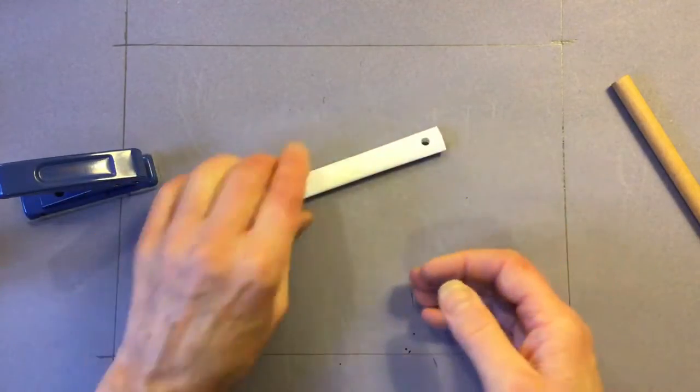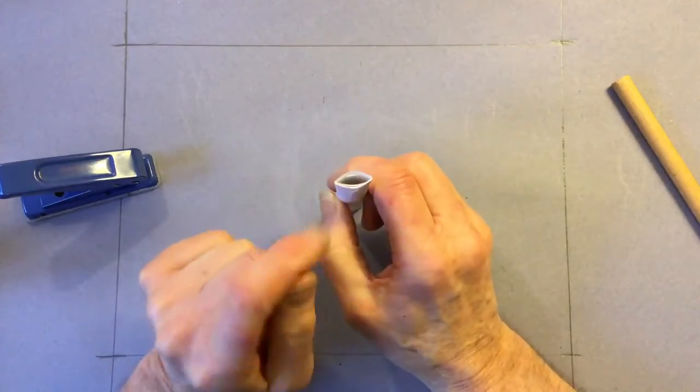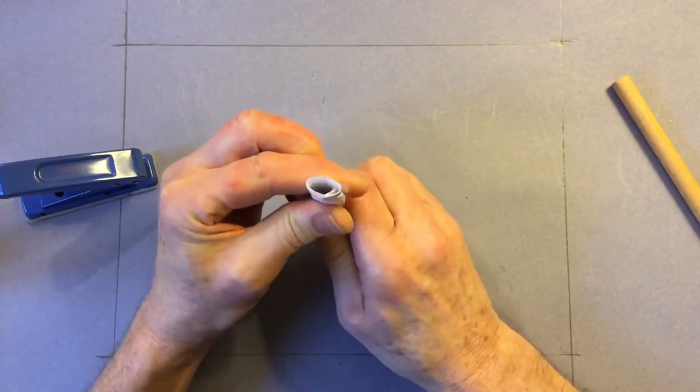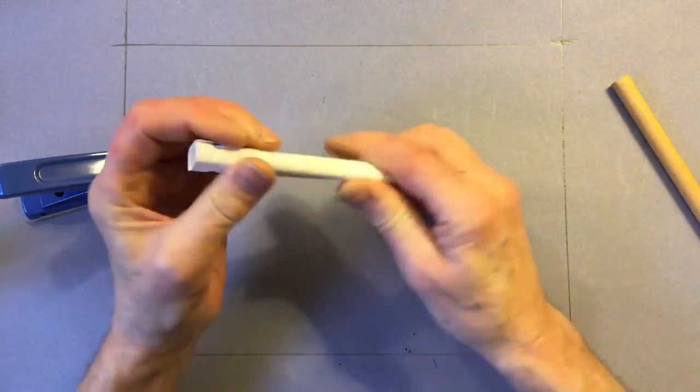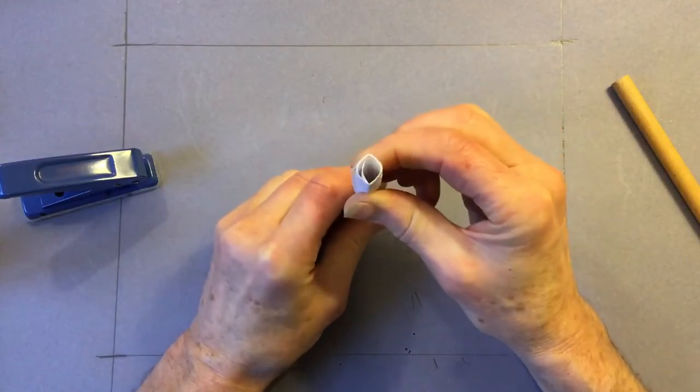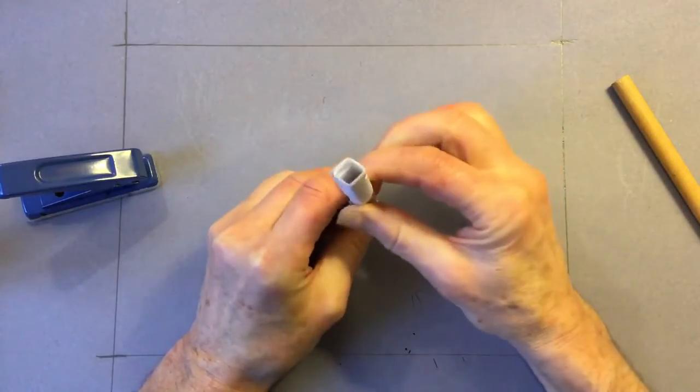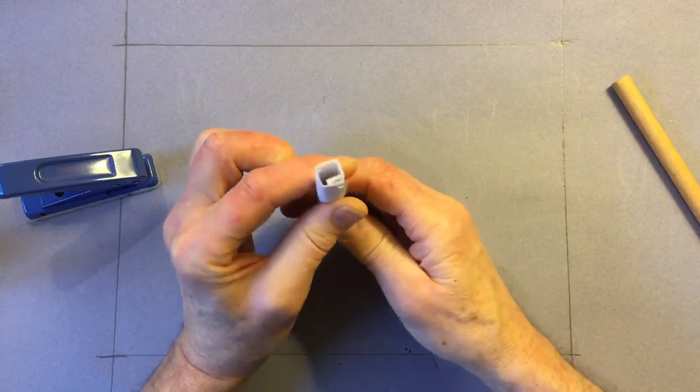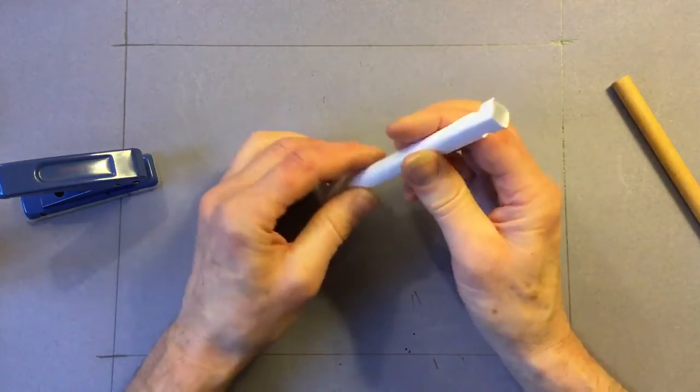So that would be a very good roll tube, apart from the fact that we've squashed it. So now just make an effort to open it back out again and you'll find that the structures you make will be stronger. It's never quite going to be the same but it's basically a tube.